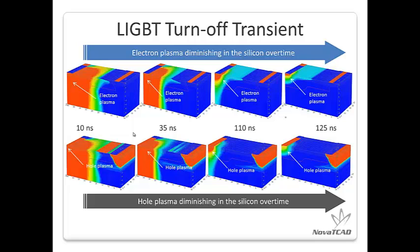Our next example is a segmented anode LIGBT — Lateral Insulated Gate Bipolar Transistor. The turnoff transient simulation results of electron and hole plasma are shown at different time spots at 10, 35, 110, and 125 nanoseconds. We can see how the electrons and holes are extracted from the drift region during the device turnoff.